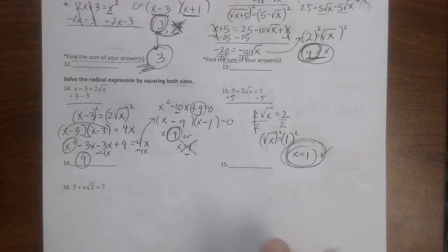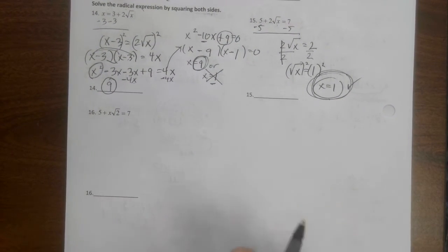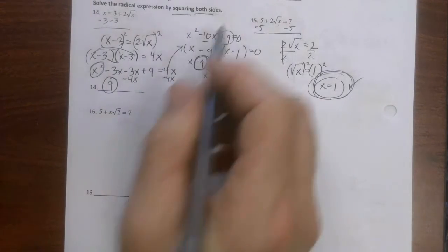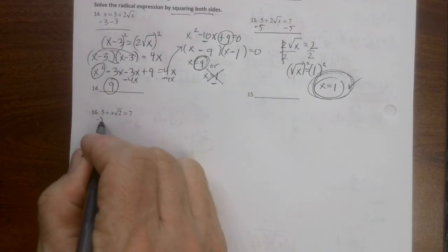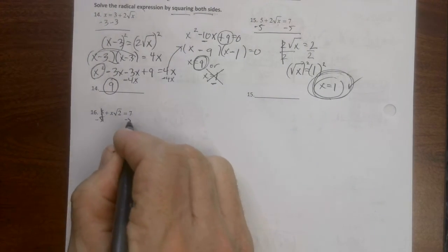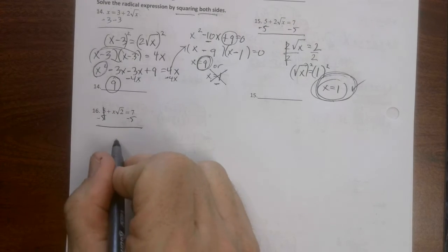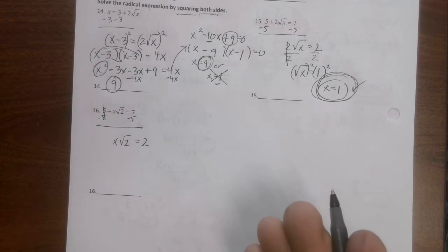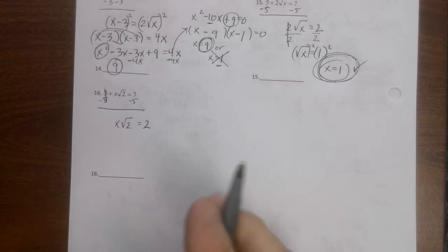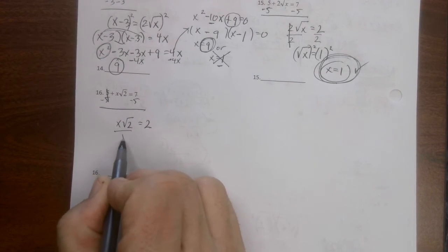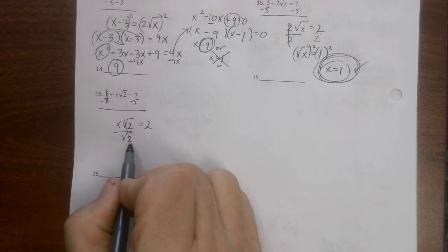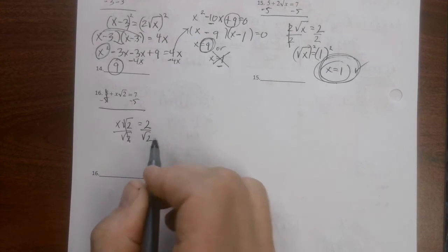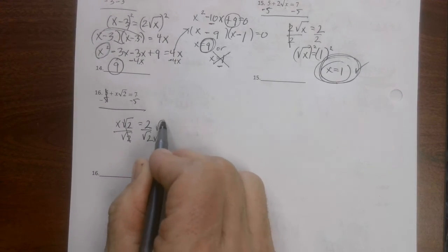Last one, you guys. So this one tells us to square both sides, but on this one we're not gonna subtract five. We get x square root of two equals two. What am I trying to find? I'm trying to find x. Why would I square both sides? Just divide by the square root of two. Divide by the square root of two.